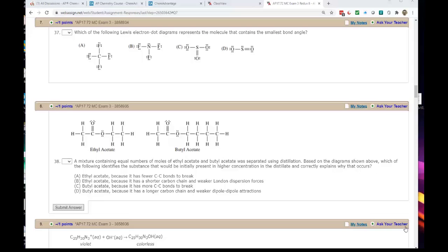I wanted to talk about question number 37. It's a nice opportunity to go over Lewis dot diagrams and shapes of molecules with a couple of extra twists. The question asks which of the following Lewis dot diagrams represents the molecule that contains the smallest bond angle. We're looking for a small bond angle and we've got four choices here with complete Lewis dot diagrams.